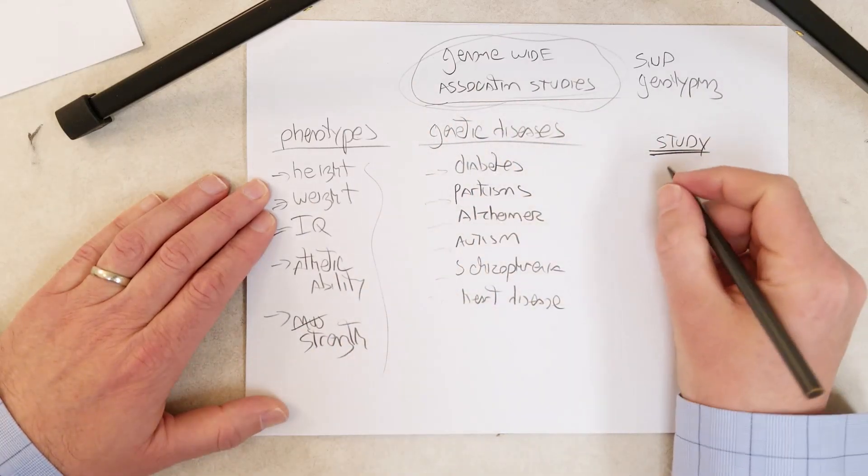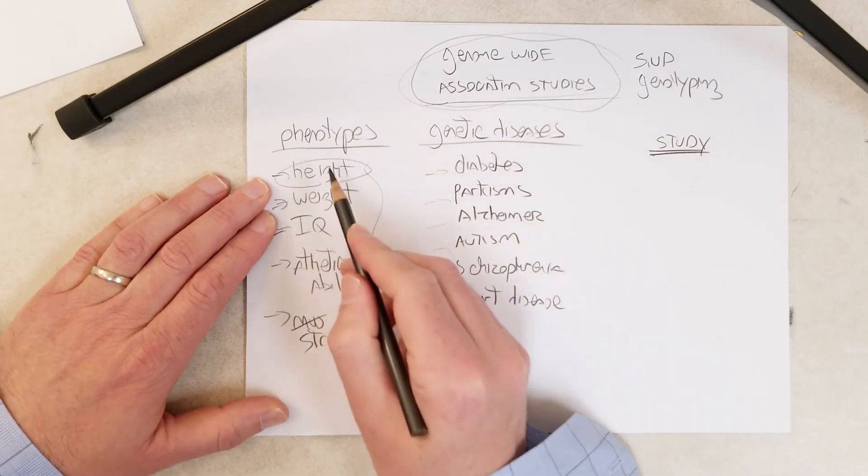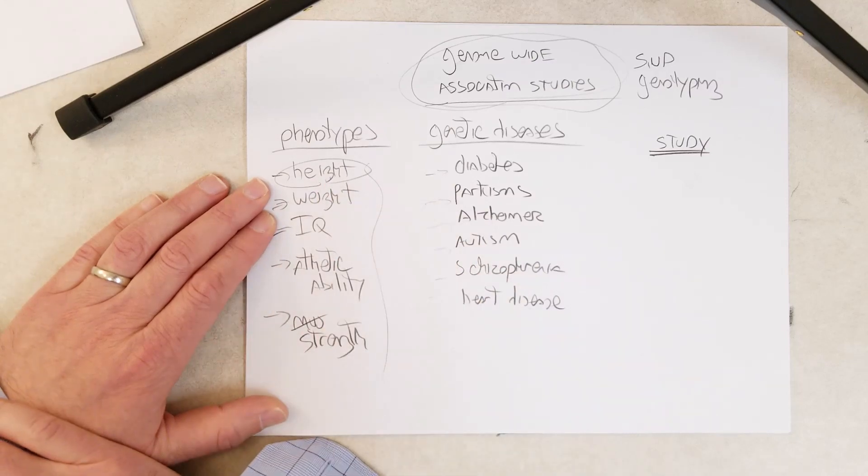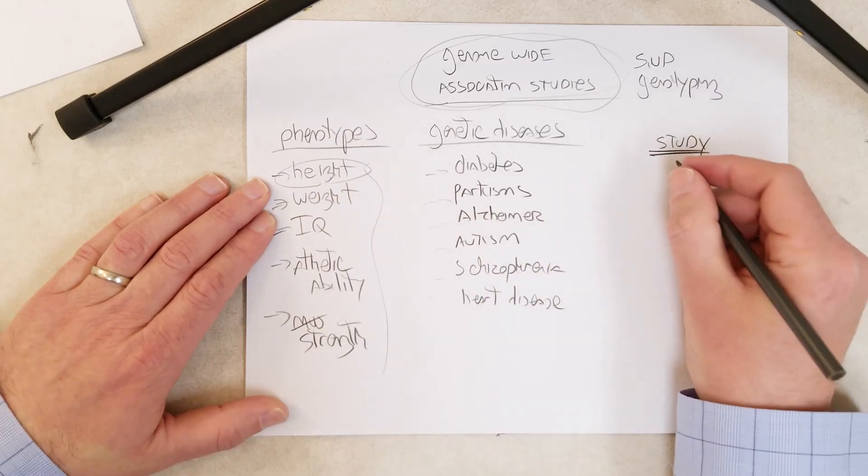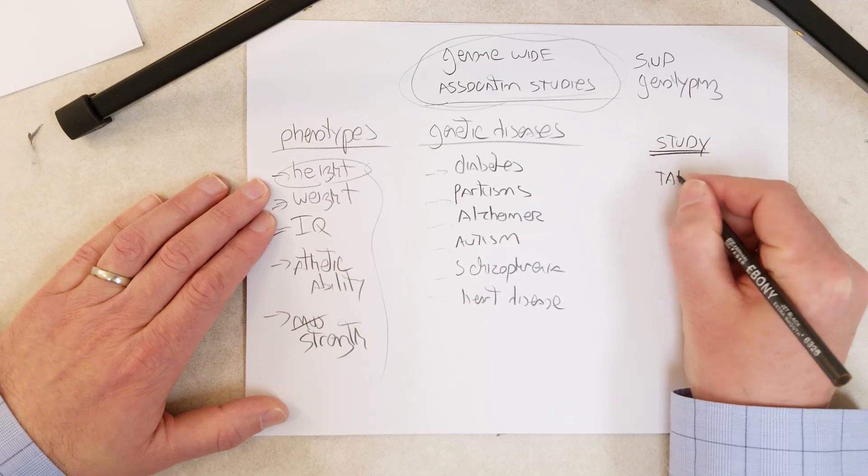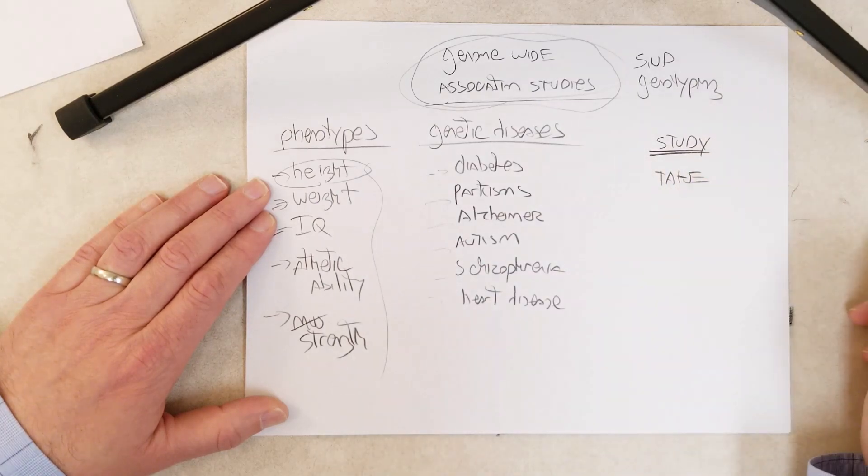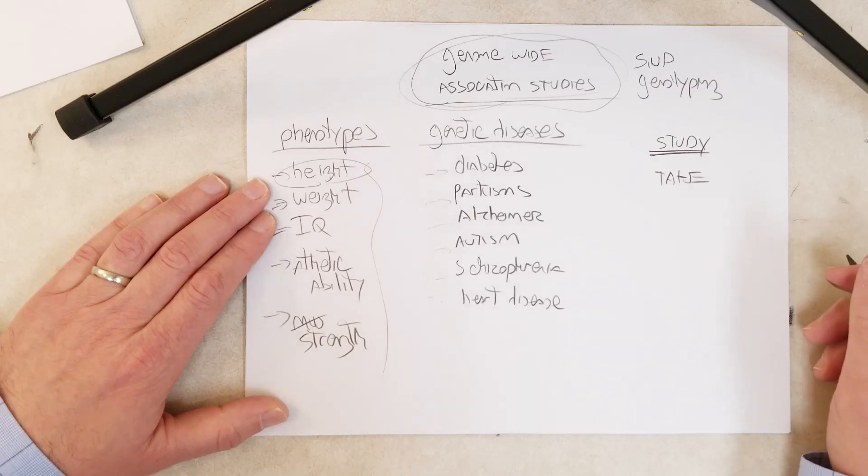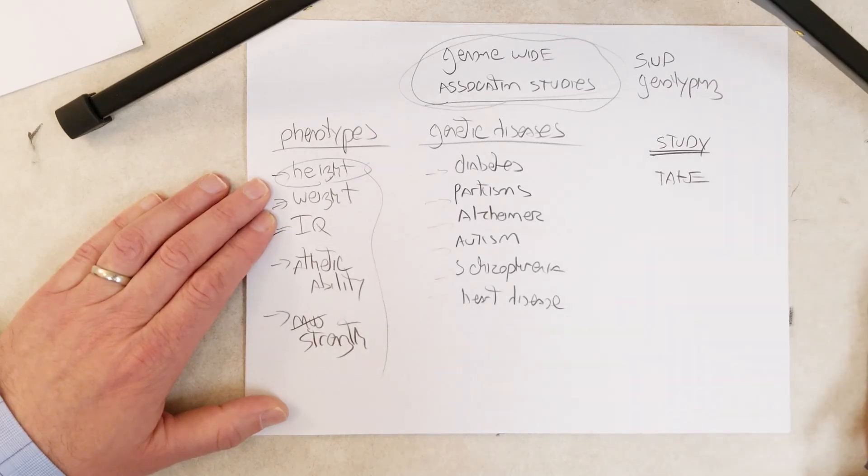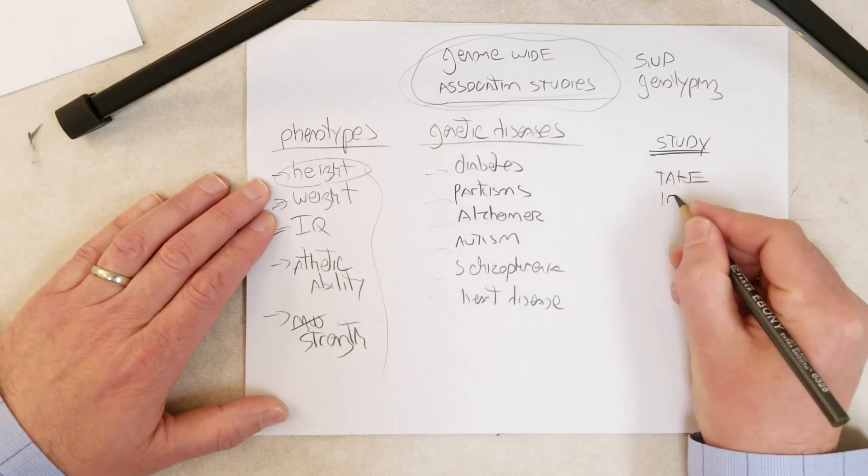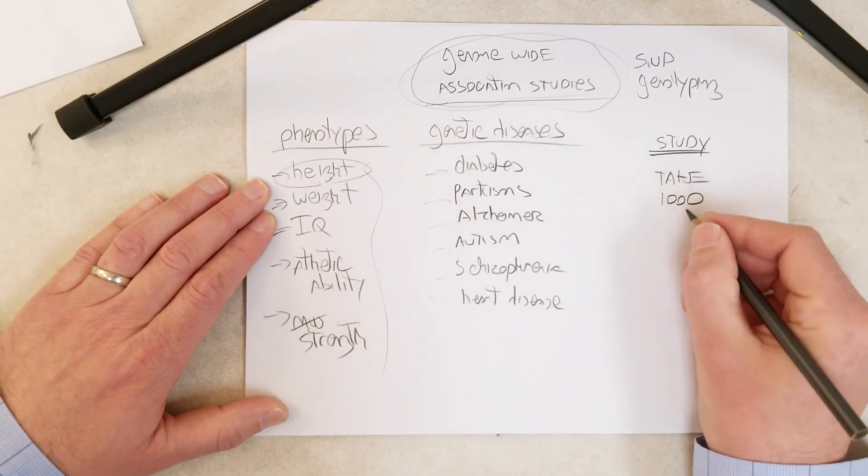Essentially, let's say we wanted to study the genetic basis of height in humans. What we could do is submit a grant to the National Institutes of Health, get some money - a million dollars or a hundred thousand dollars - and what we can do is find 1,000 volunteers.